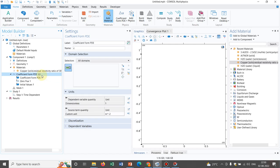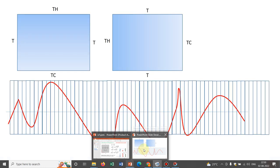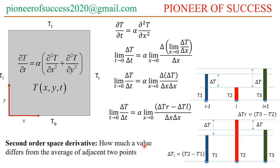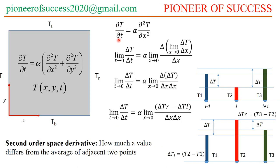Whenever you work with any differential equation in COMSOL, what you need to do is look at the units. We have been talking about the heat equation. The heat equation has a del T / del t term, so the unit will be temperature divided by time — that is Kelvin per second.